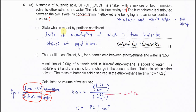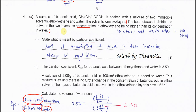When you define the partition coefficient, it is simply the ratio of the concentration of a solute in two immiscible solvents at equilibrium. It is the ratio of the concentration of the solute in the two solvents.